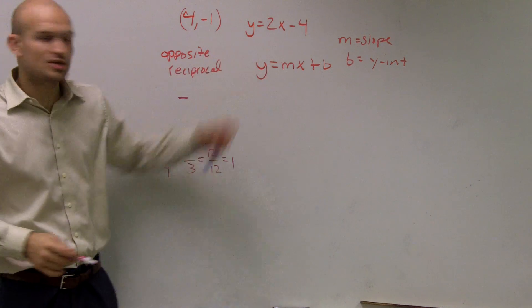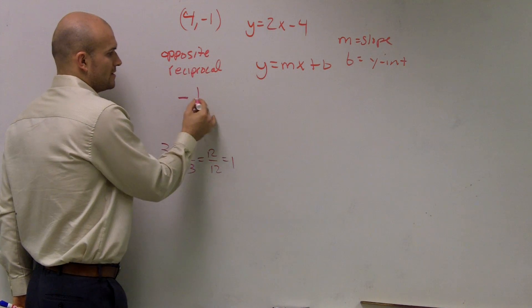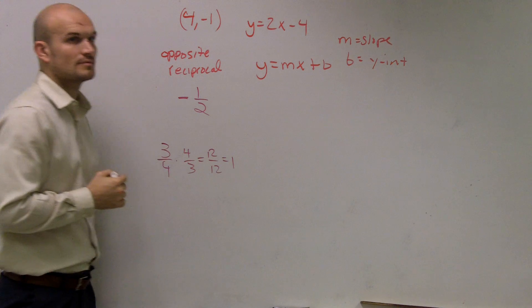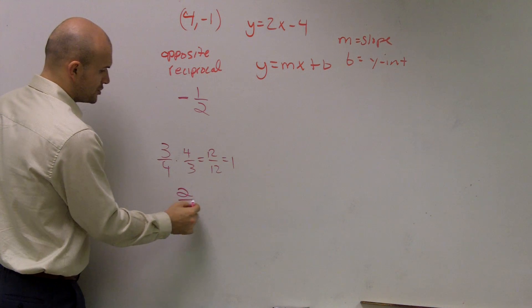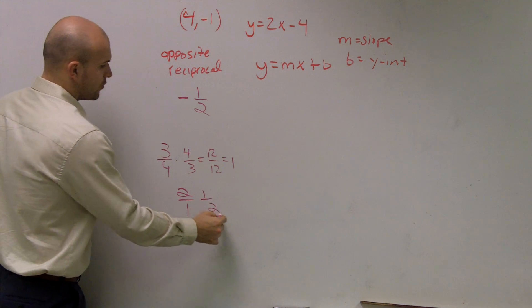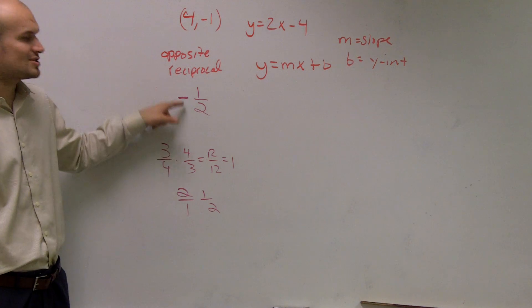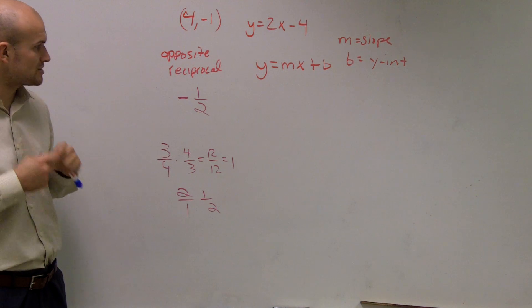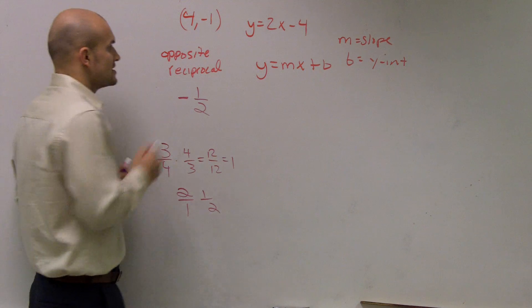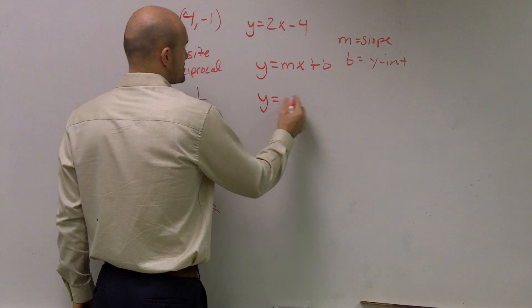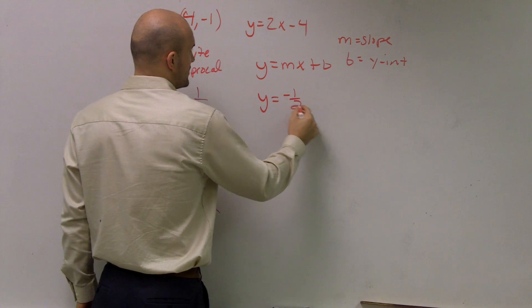So the reciprocal of 2 is going to be 1/2. If you think about it as 2/1, the reciprocal is 1/2. You just flip the numerator and the denominator. So my new slope is negative 1/2. I say y equals negative 1/2 x.